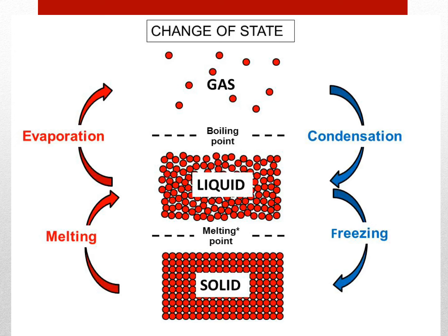Now I want to talk about change of state. When something solid reaches its melting point it becomes liquid, then after it reaches its boiling point it becomes a gas, as you can see in the picture. The processes involved include condensation, evaporation, melting, freezing, and boiling, and we will talk about each one of those.